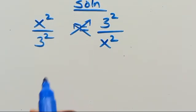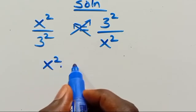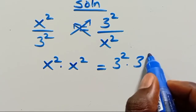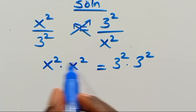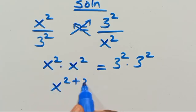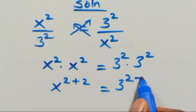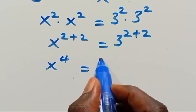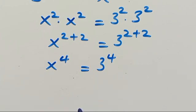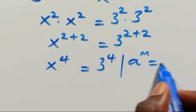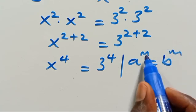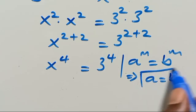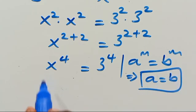When we cross multiply, X times X from here gives X squared times X squared, which equals T squared times T squared. X squared times X squared will be X to the power of 2 plus 2, and this will also be 3 to the power of 2 plus 2. So X to the power of 4 equals 3 to the power of 4. Recall that when A to the power of M equals B to the power of M, you can equate the bases since the powers are the same.